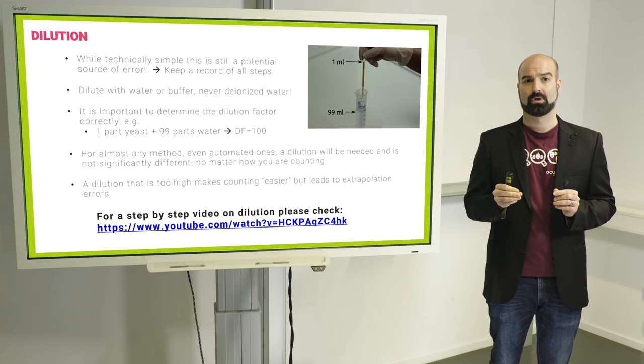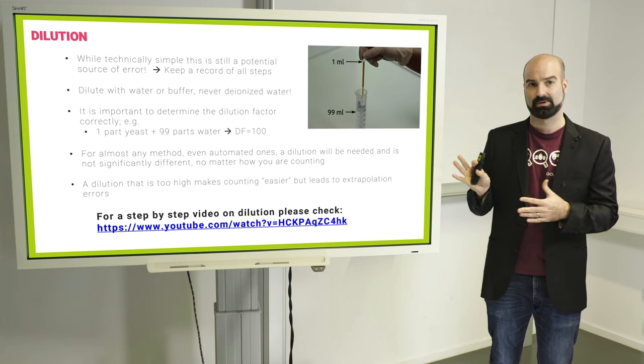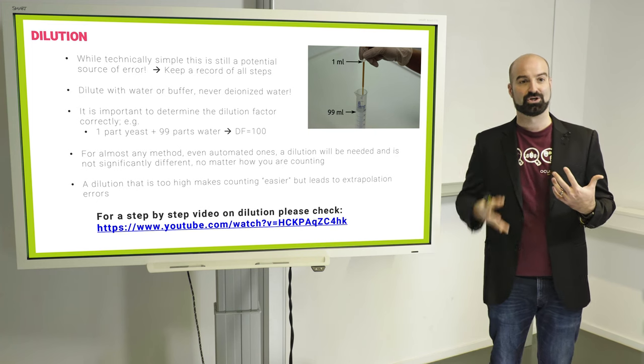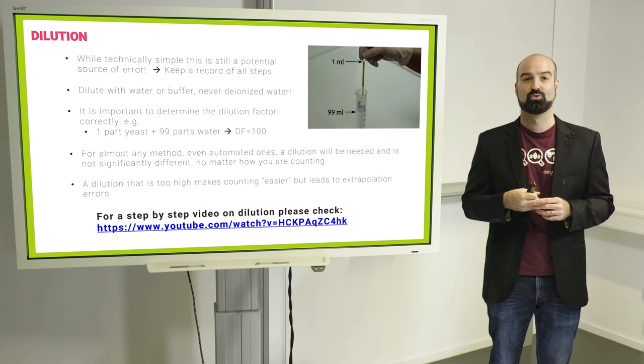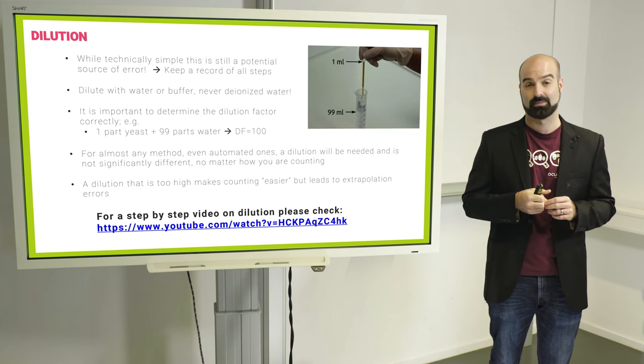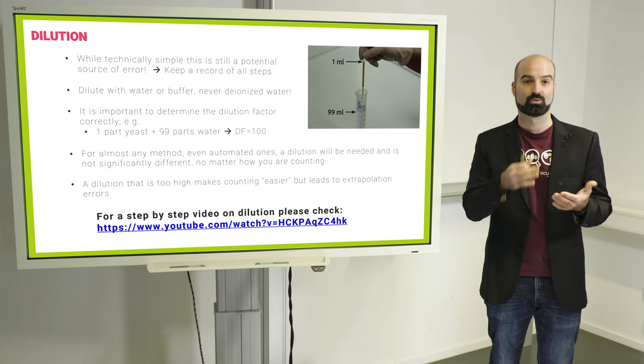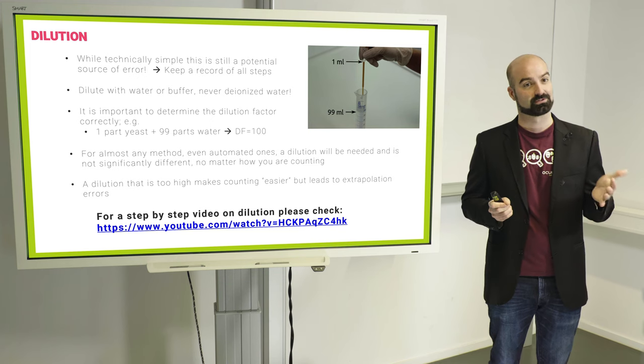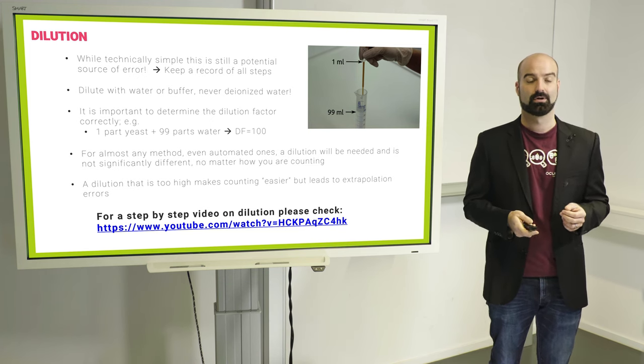It's important to note that almost any system used for counting, I mean we're talking about manual counting here now, but automated counting as well, you will have to dilute yourself. So any mistake you make here, automation is not really going to save you. And finally, do not dilute too much just to have an easier count. This is something we've seen quite a bit as well, where people dilute maybe by a factor 10 more than they should, just so it's quick to count because you only have five cells in your counting grid. So definitely don't do that. Just dilute so you have a reasonable number of cells in your counting chamber.